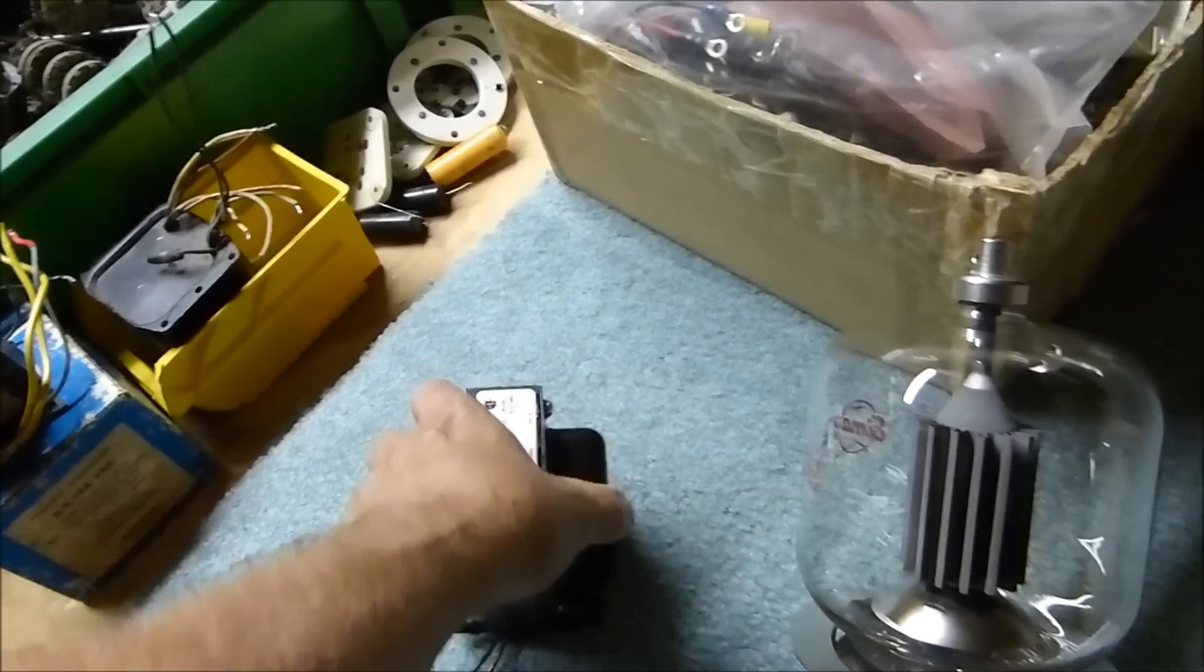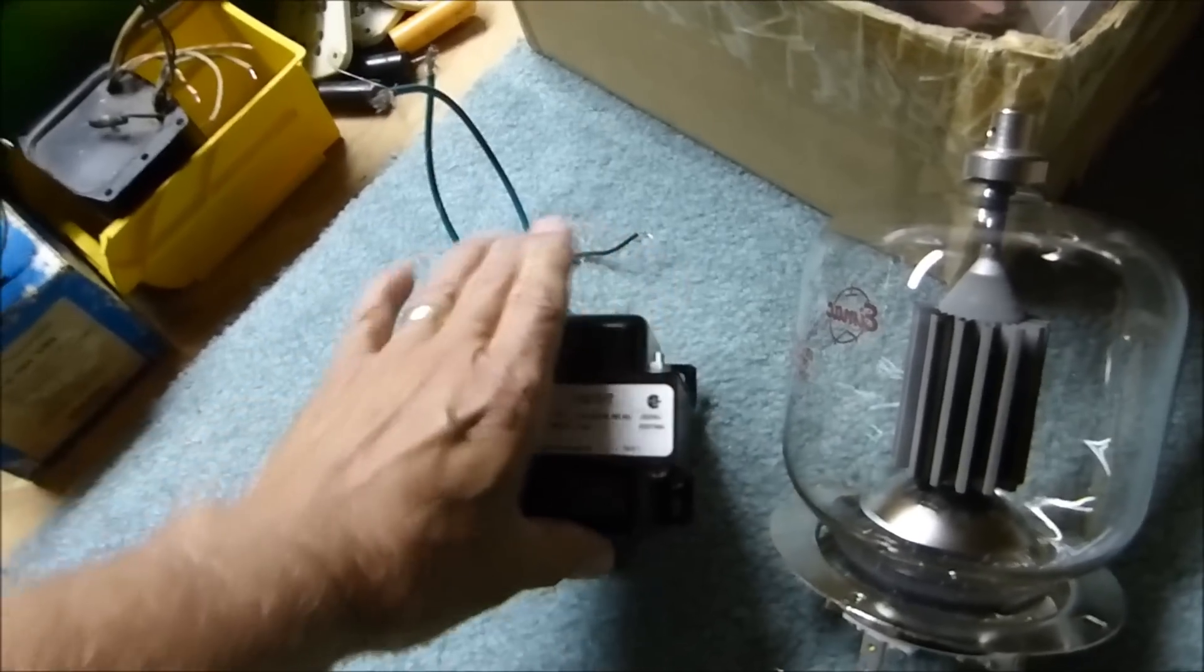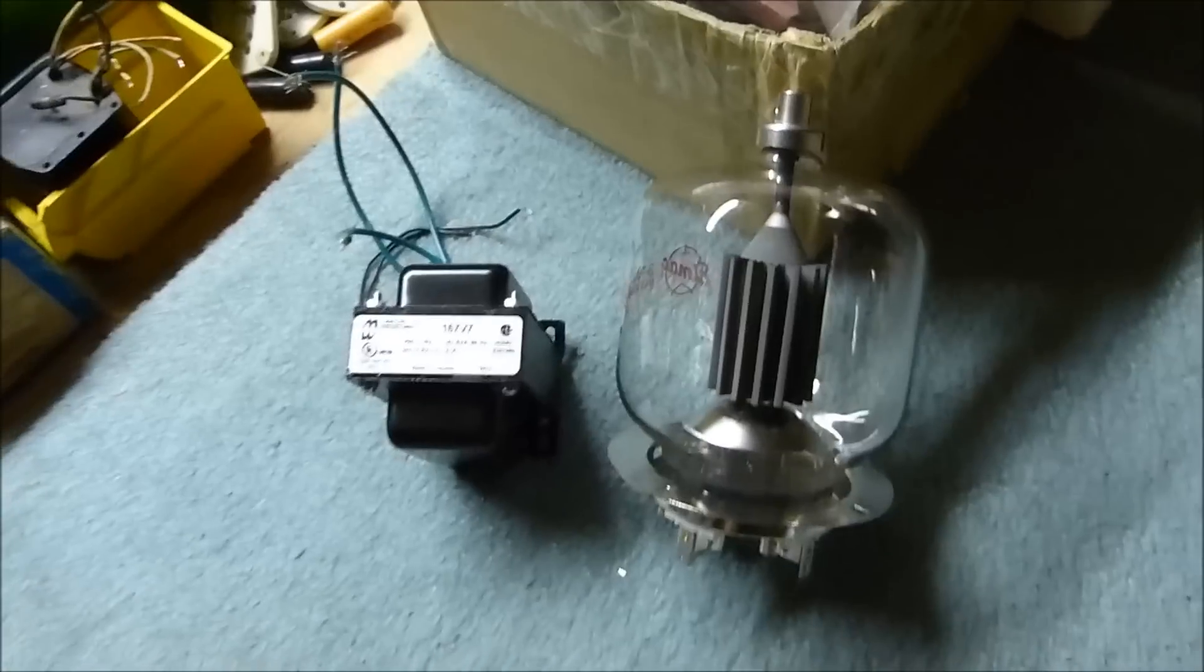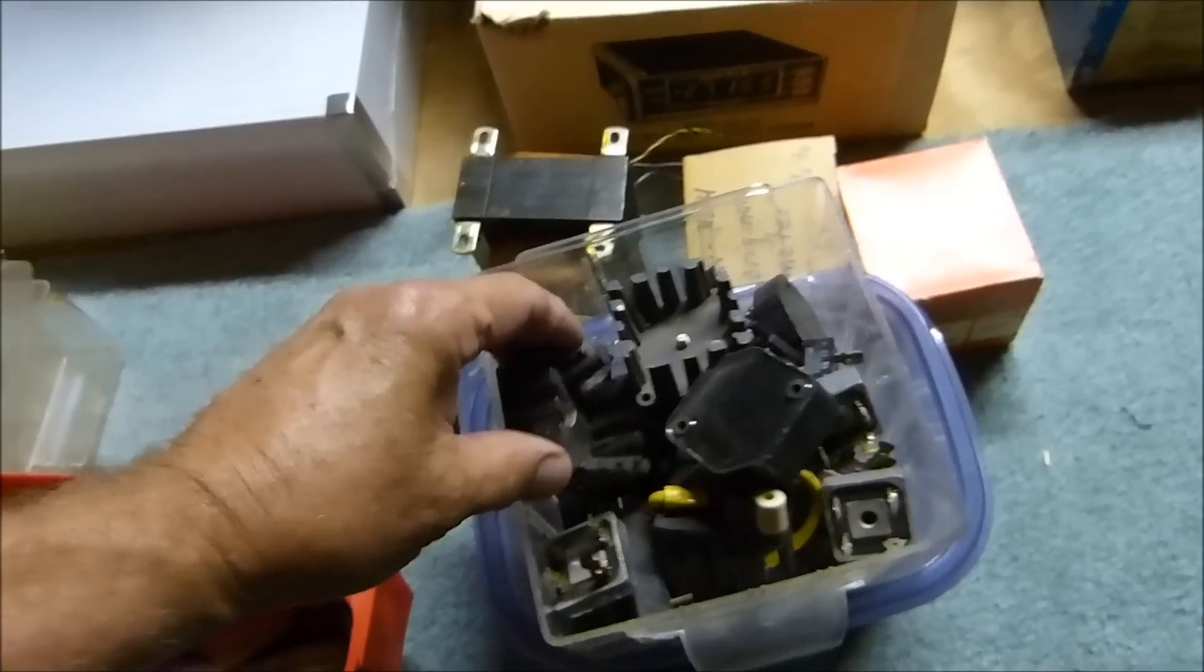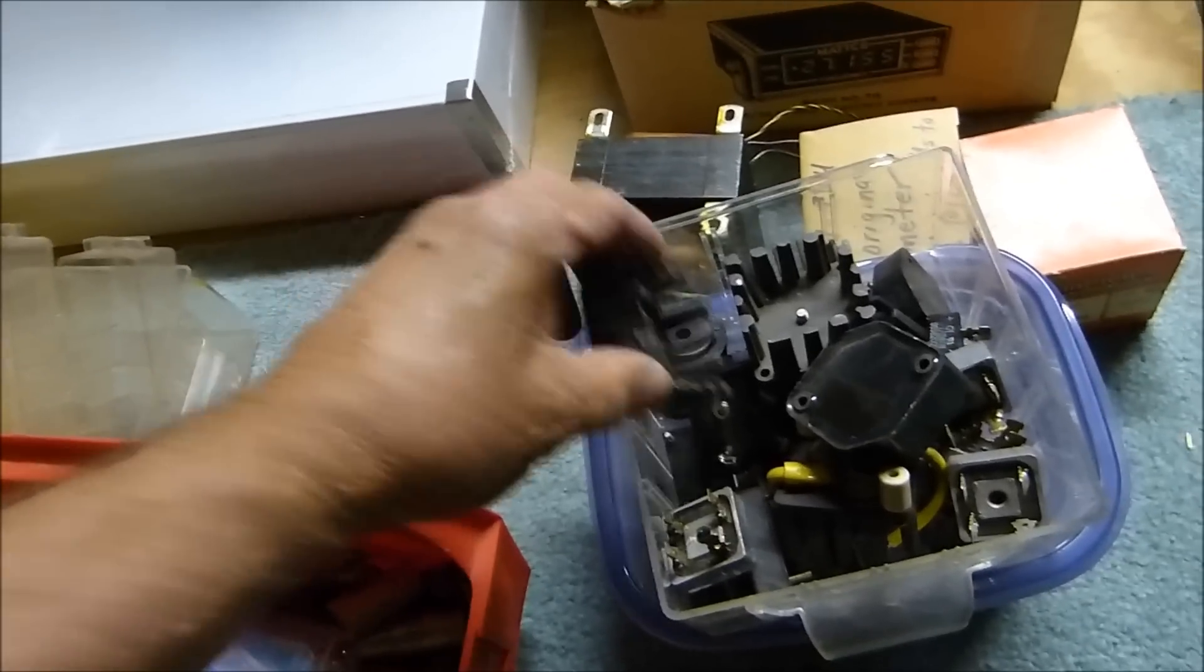Just a month or so ago I got in the filament transformer for it. Those are the unique things you actually have to collect before you start building. This is a 7.5 volt 21 amp - that's what it takes to light that guy. I'm going to use these kind of rectifiers and a heat sink.